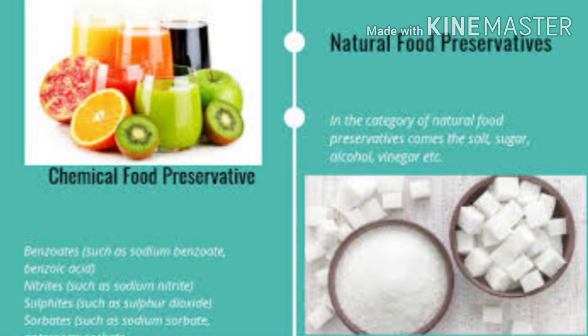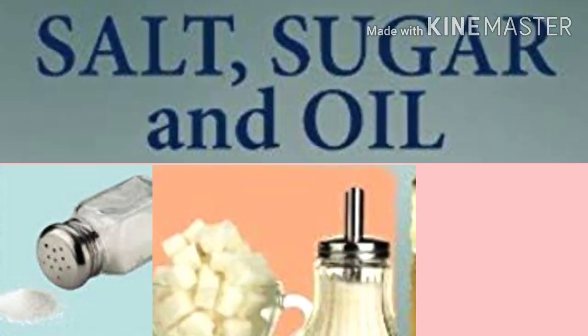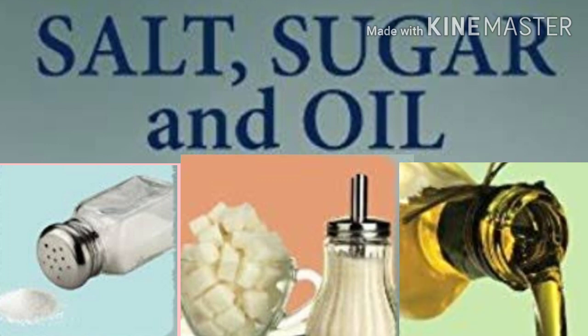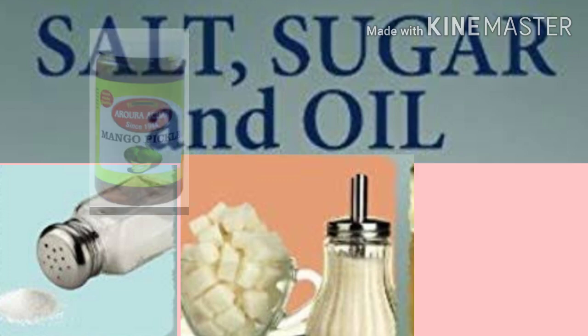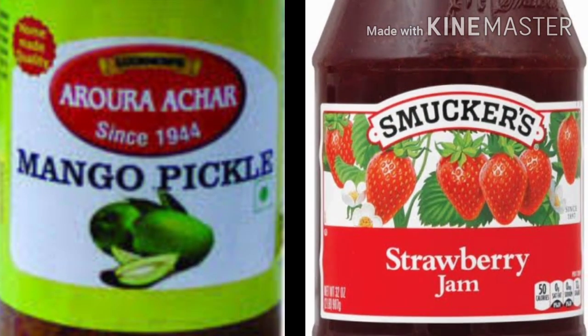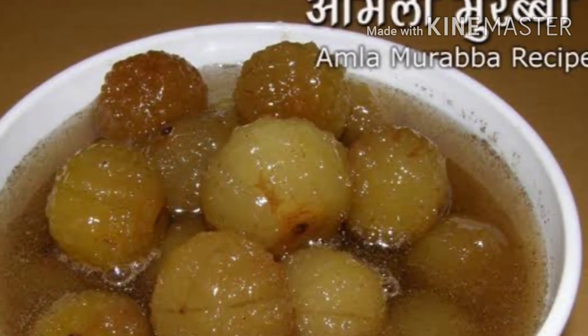Number 6: Use of preservatives means parirakshakansha vapor. Number 1: Natural preservatives means naisargic parirakshak. Some naturally available materials like salt, sugar, and oil are used as preservatives in pickles, jams, murabba, and petha.